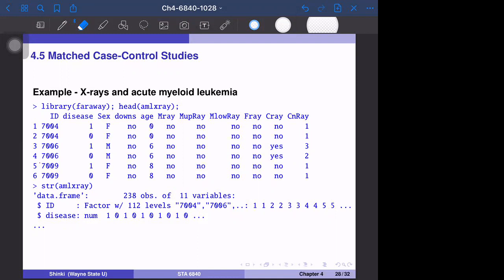This example investigates X-rays and acute myeloid leukemia, examining the relationship between disease occurrence and other variables including demographic and X-ray variables. This data has the structure of case-control studies.